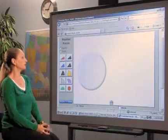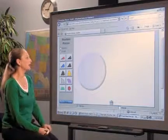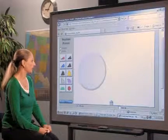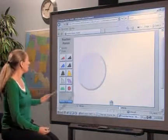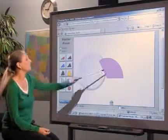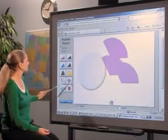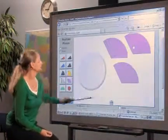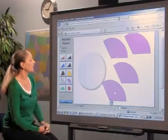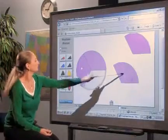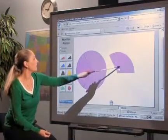These models also help students convert between improper fractions and mixed numbers. You can use the virtual fraction pieces, found at the National Library of Virtual Manipulatives, to ask students to convert from improper fractions to mixed numbers. Here, students can see that four-thirds equals one and one-third.